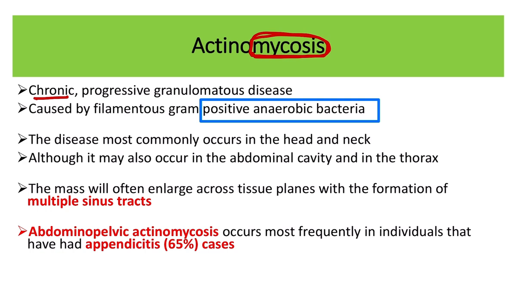Actinomycosis most commonly affects the head and neck area, but it may occur in any part of the body — the abdomen, lower back, legs, and elsewhere. It can also occur in the abdominal and thoracic cavities, and it characteristically forms multiple sinus tracts. In cases of abdominopelvic actinomycosis, the most frequent site is the appendix.